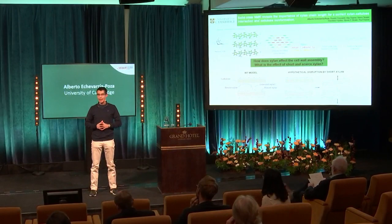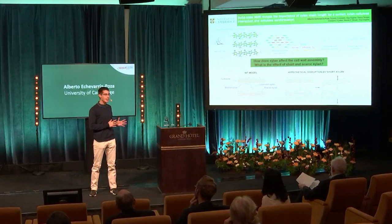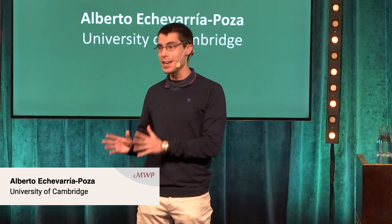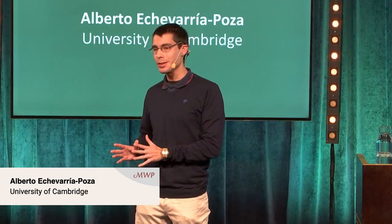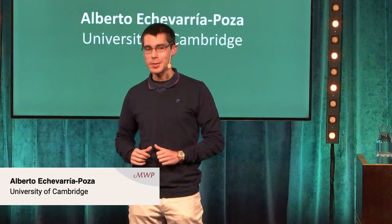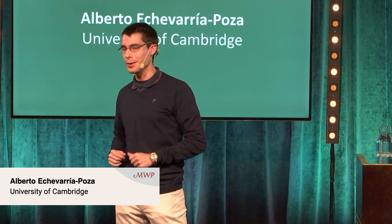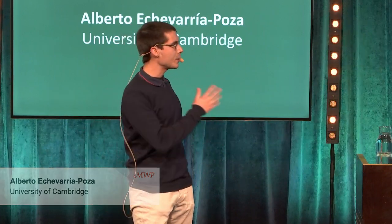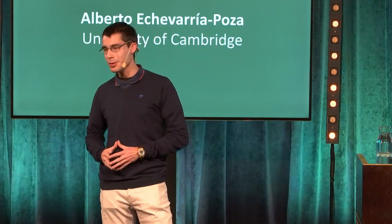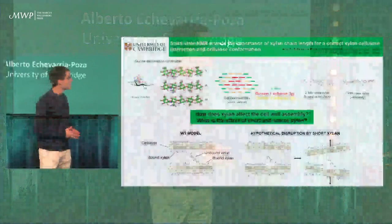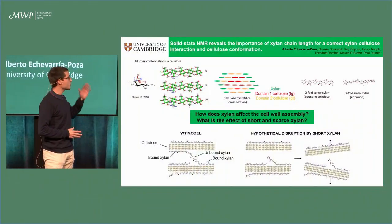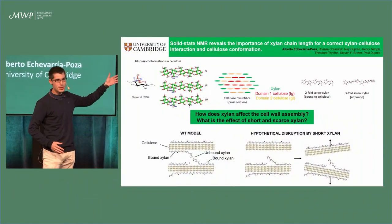Have you ever wondered how cellulose and xylan interact at a molecular level? My name is Alberto and that is what I'm trying to find out. Cellulose and xylan are two of the main components of wood. Cellulose is a chain of glucose residues.